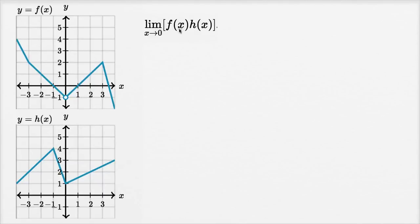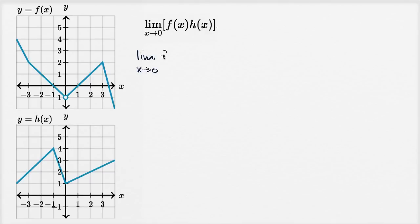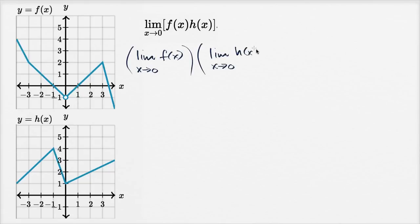Let's find the limit of f of x times h of x as x approaches zero. We have graphical depictions of the graphs y equals f of x and y equals h of x. We know from our limit properties that this is going to be the same thing as the limit as x approaches zero of f of x, times the limit as x approaches zero of h of x. Let's think about what each of these are.